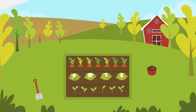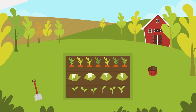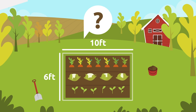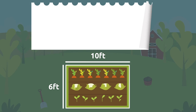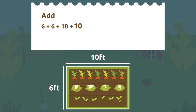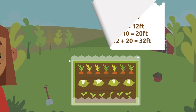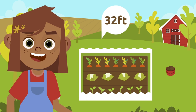Anna wants to put a fence around the vegetable garden she built in her yard. The space has a rectangular shape and measures 6 feet wide and 10 feet long. How many feet of fence material does she need? We can add 6 plus 6 plus 10 plus 10, which equals 32, or multiply: 2 times 6 equals 12 and 2 times 10 equals 20, then 12 plus 20 equals 32. Anna needs to buy 32 feet of fencing material.